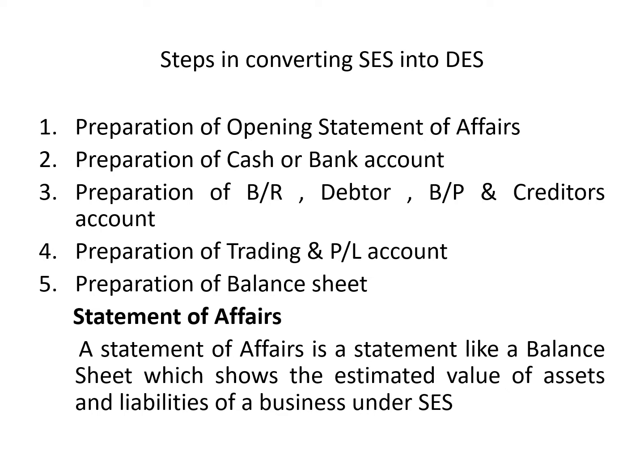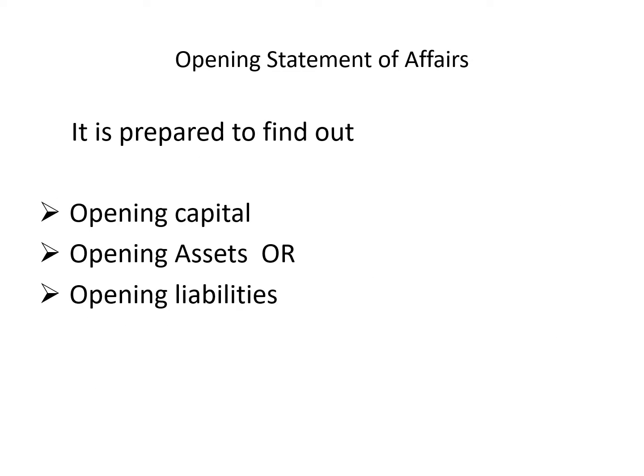The very first step is the statement of affairs. The statement of affairs is like a balance sheet which shows the estimated value of assets and liabilities under single-entry system. The opening statement of affairs is like a balance sheet which shows opening assets and liabilities of a concern as on the opening date. It is prepared to ascertain either opening capital, opening debtors, opening creditors, opening BP, opening BR, opening cash in hand or at bank, or sometimes even opening stock.